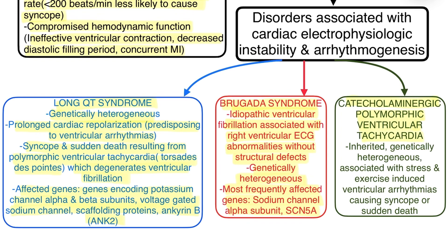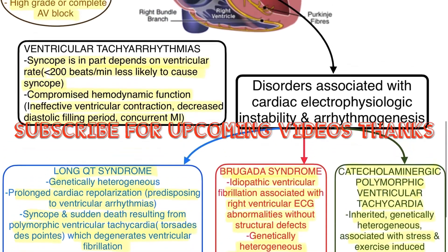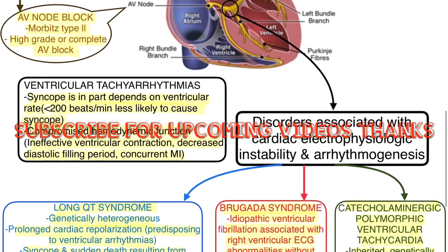Catecholaminergic polymorphic ventricular tachycardia is associated with stress and exercise-induced ventricular arrhythmias, causing syncope or sudden death. So this is all about cardiac syncope and some important syndromes related to it.